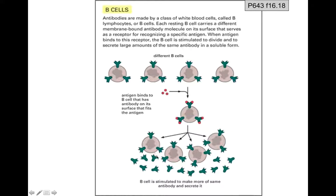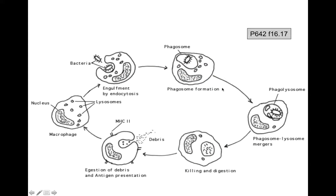The activated B cell secretes antibodies into the plasma, which then go and do their job. A macrophage finds bacteria and takes them in through phagocytosis, extending pseudopods around the bacterium and enclosing it in a vesicle called a phagosome — inside the phagocyte, secluded so the bacteria can't get into cells to do damage. The macrophage then allows lysosomes to fuse with the phagosome, forming the phagolysosome, whose digestive enzymes tear up the bacterium.